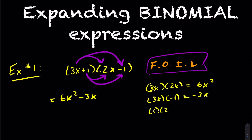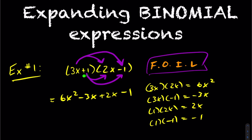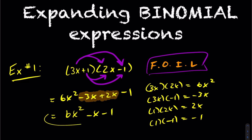Then we have 1 times 2x, which is 2x, and lastly 1 times negative 1, which is negative 1. Notice you're always grabbing the sign in front. Once you've done that, you're looking to collect like terms — the negative 3x and 2x are like terms — so this becomes 6x squared minus x minus 1. That's the FOIL method.